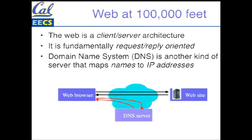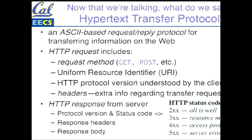Now that we know how to talk to an endpoint, what do we say? We say something using the hypertext transfer protocol. Just like TCP relies on IP, HTTP relies on TCP, so it assumes it can reliably send strings back and forth. The strings are simple ASCII strings that typically begin with a verb like GET or POST, followed by a URI, and often include the HTTP protocol version. The server, if all goes well, responds with a confirmation of the protocol version, a status code indicating success or failure, and then headers and the body — the actual content the client asked for.